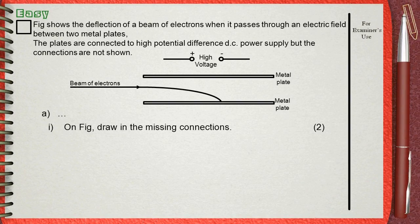The figure shows the deflection of a beam of electrons when it passes through an electric field between two metal plates. The plates are connected to a high potential difference DC power supply, but the connections are not shown.